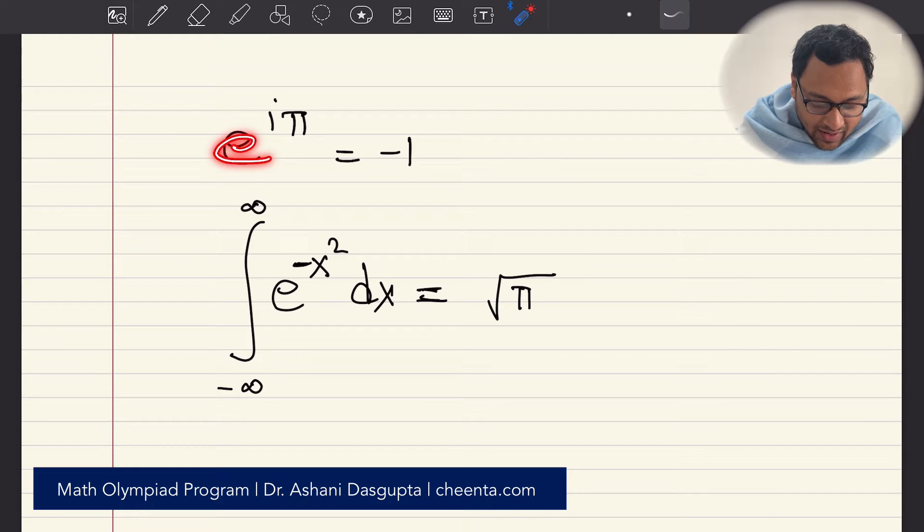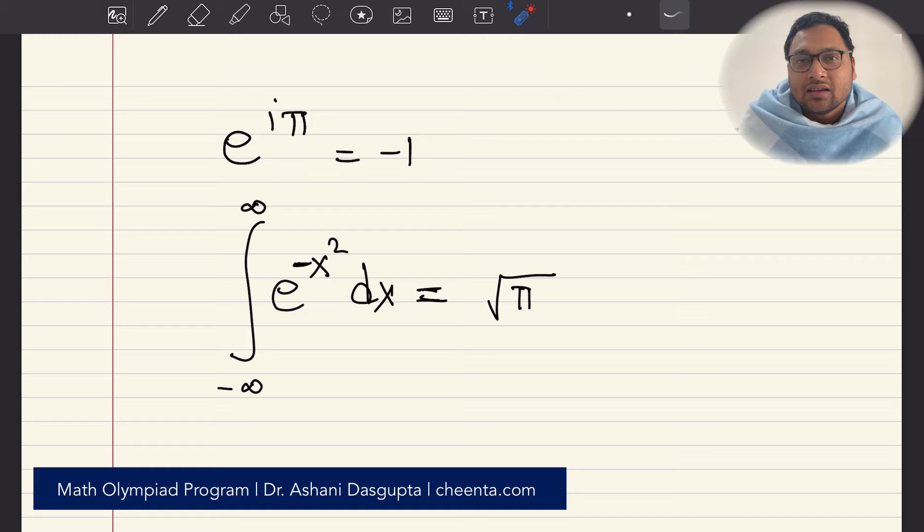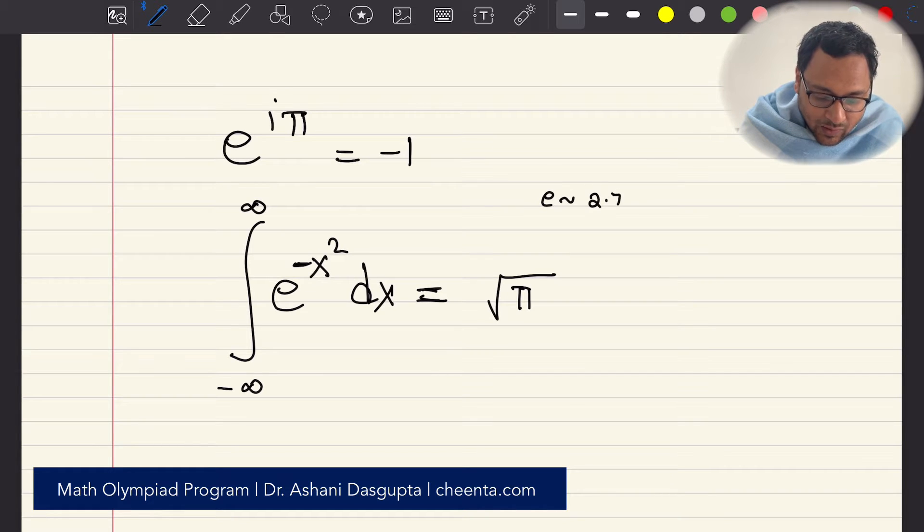One is e to the power i pi equals minus one and the other one which sort of leads to normal distribution probability theory is the integration of minus infinity to plus infinity of e to the power minus x squared dx. This turns out to be square root of pi. These two formulas connect two of the most beautiful numbers in mathematics. The Euler number or e is approximately 2.71 and pi which is 3.14.